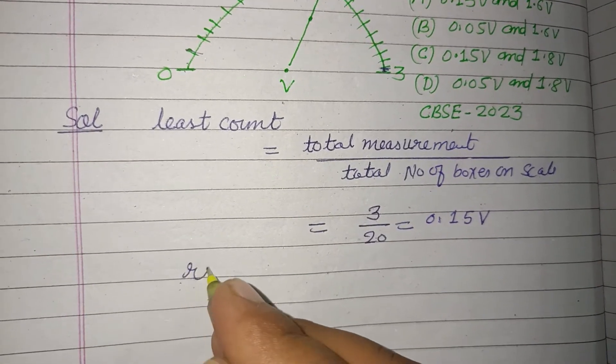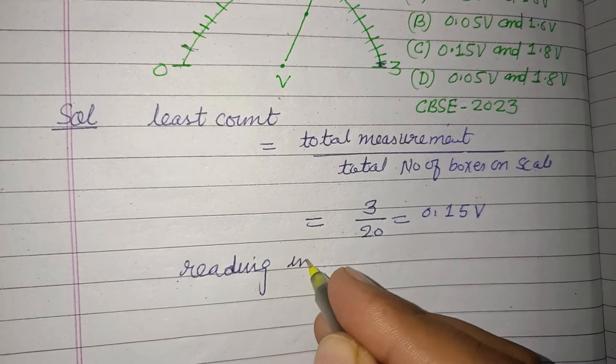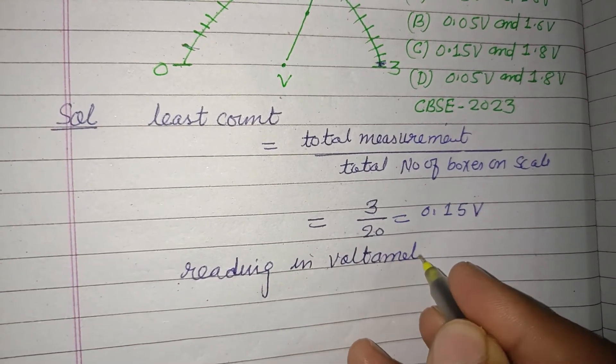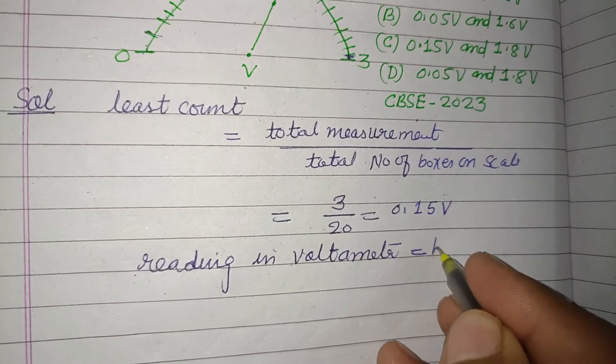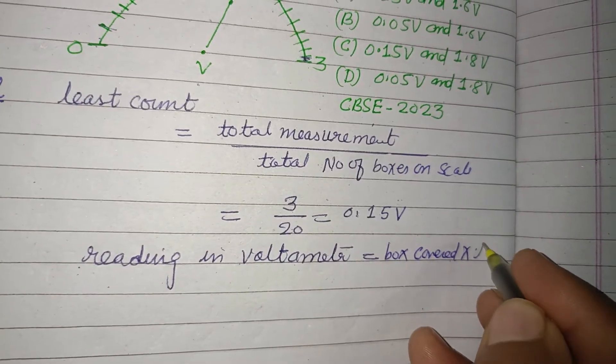Now reading, current reading in voltmeter equals box covered into least count.